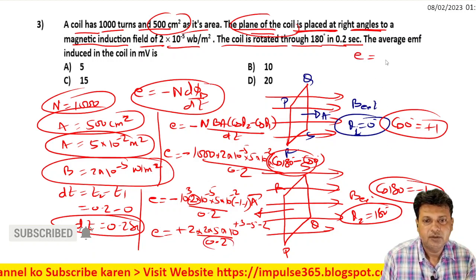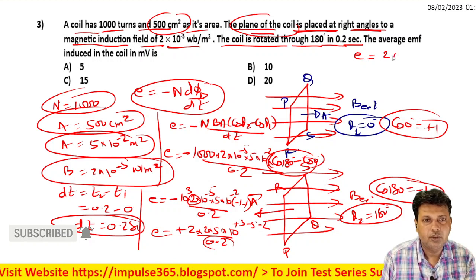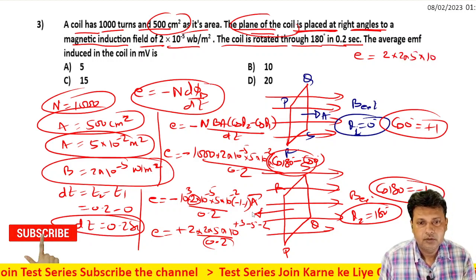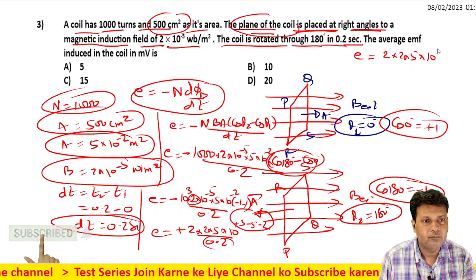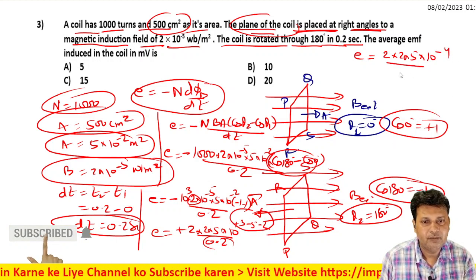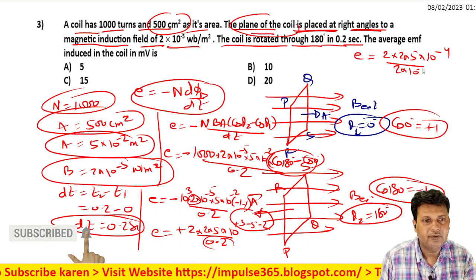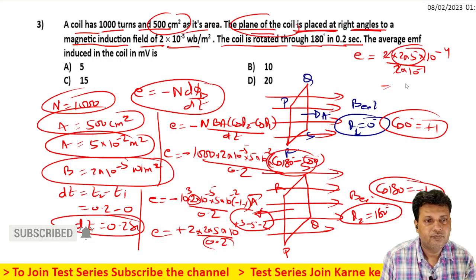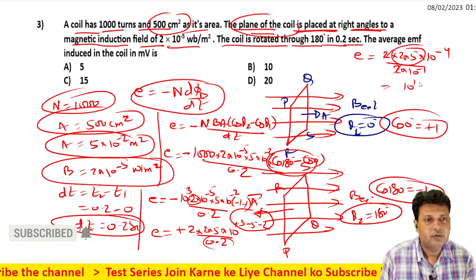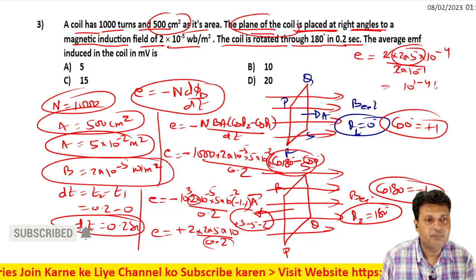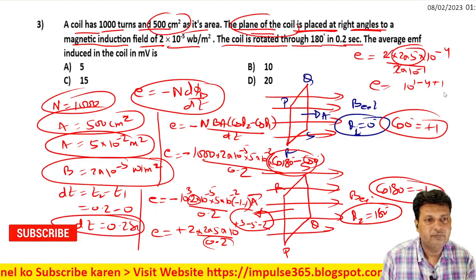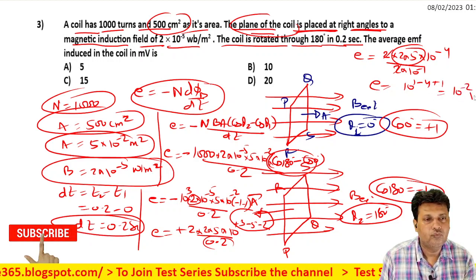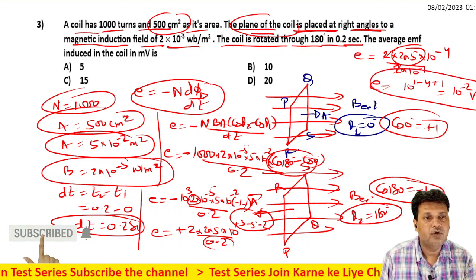Simplifying: 2 into 2 into 5 into 10 to power minus 4 divided by 2 into 10 to power minus 1. The 2s cancel, 10⁻¹ in denominator becomes 10⁺¹ in numerator, giving 10 to power minus 2 volt.